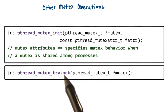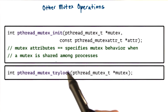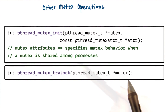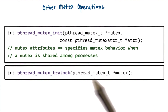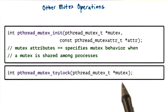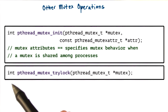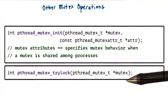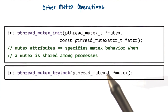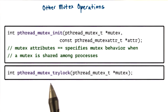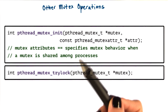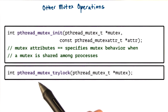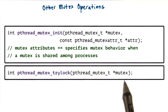Another interesting operation is pthread_mutex_trylock. Unlike the lock operation, which will block the calling thread if the mutex is in use, trylock will check the mutex and if it is in use, it will return immediately and notify the calling thread that the mutex is not available. If the mutex is free, trylock will result in the mutex successfully being locked. But if the mutex is locked, trylock will not block the calling thread, giving it an option to do something else and perhaps come back later to check if the mutex is free.